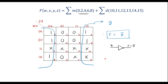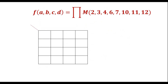Now let me consider the second example. This is the second example — we have to simplify this for max terms. Here the variables are a, b, c, d. So let me write a, b on one axis and c, d on the other. For simplification of max terms, it is better to write the variables to avoid confusion.